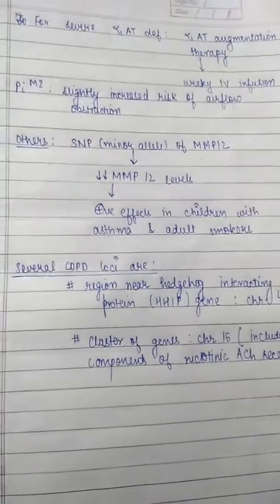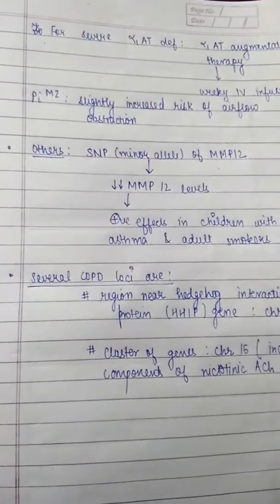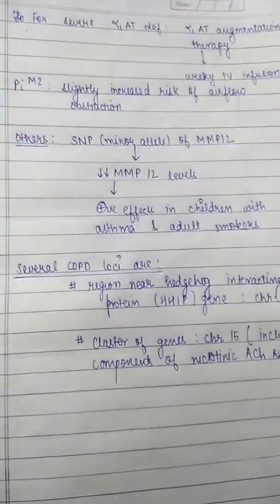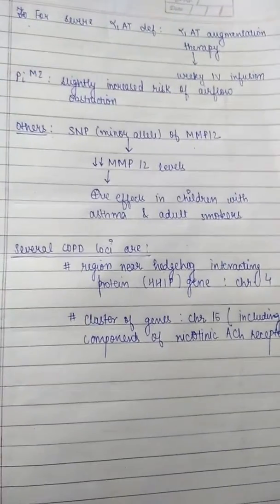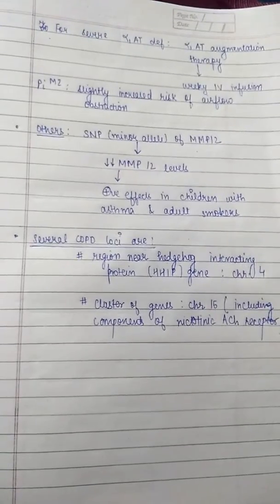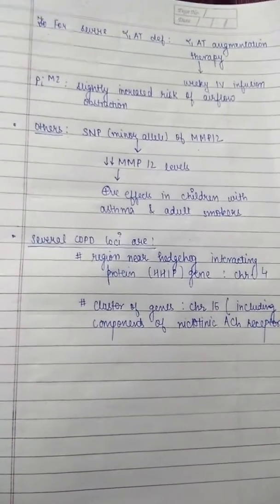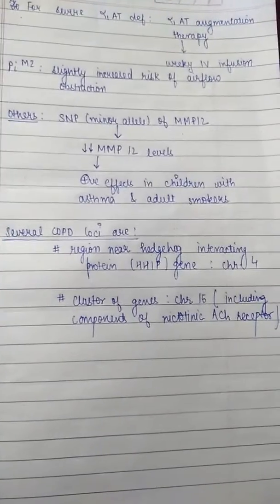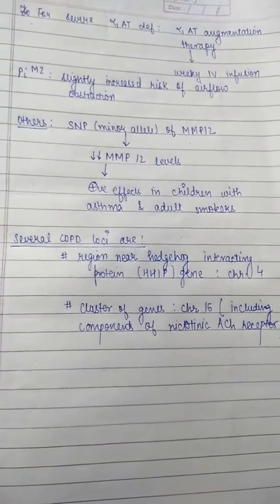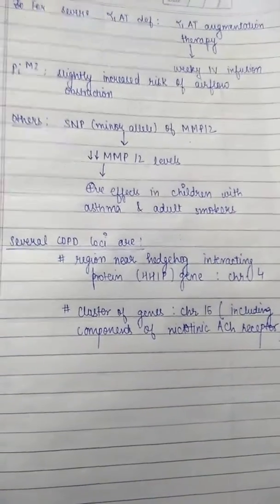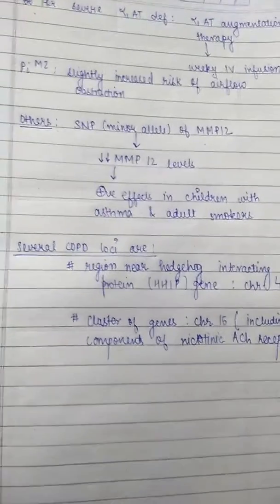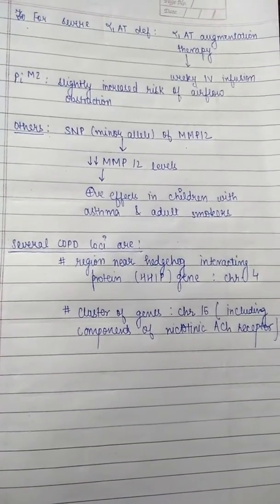If there is a single nucleotide polymorphism in the minor allele of macrophage elastase MMP-12, there are decreased MMP-12 levels, which have a positive effect in children with asthma and adult smokers. Several COPD loci have been identified, including a region near the hedgehog interacting protein HHIP gene on chromosome 4, and a cluster of genes on chromosome 15 including components of the nicotinic acetylcholine receptor.